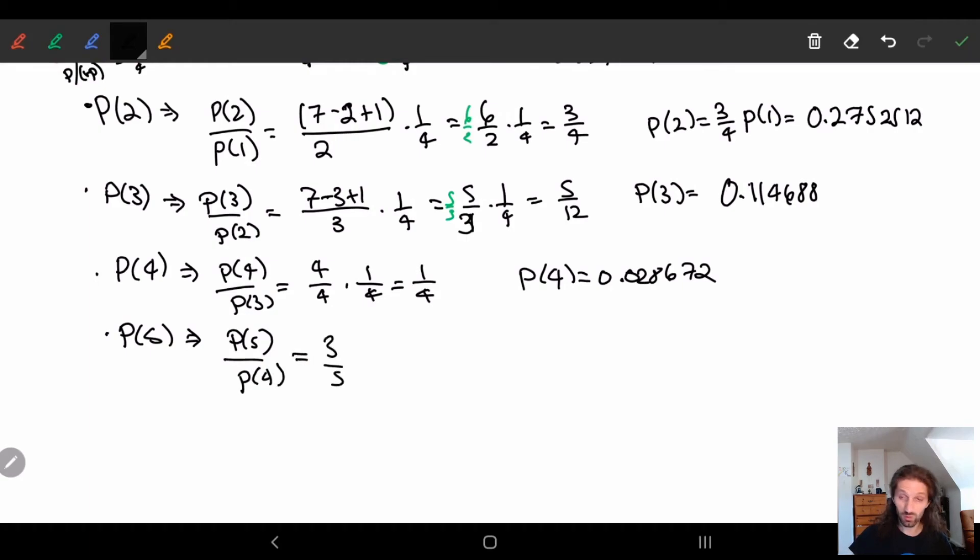So three-fifths is because we're just following that pattern from before. Times one-fourth. So we get three times twenty. So p of five is equal to 0.00... Notice how each time I'm multiplying by something smaller. So I keep on getting something smaller and smaller and smaller.